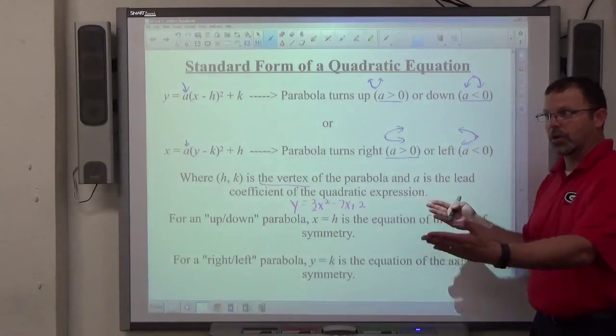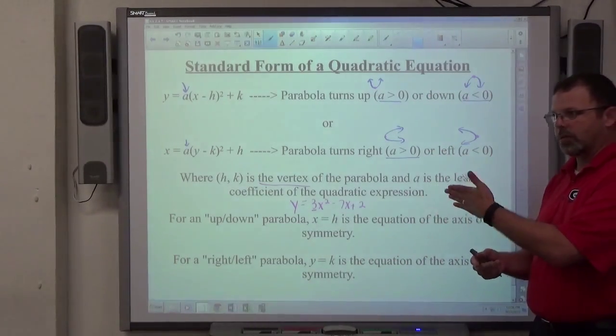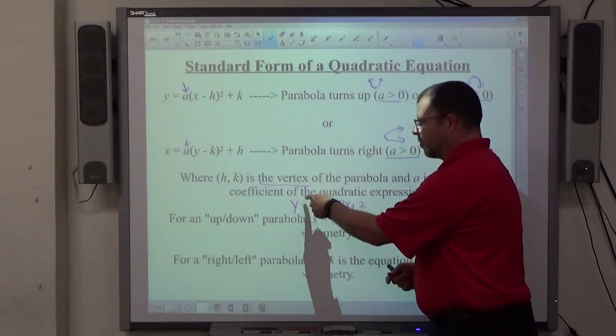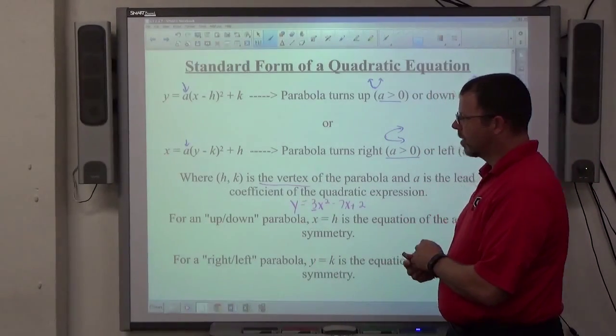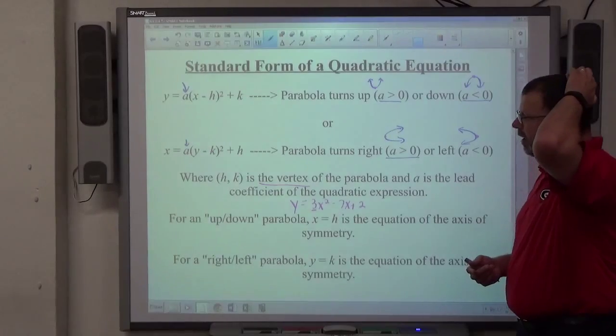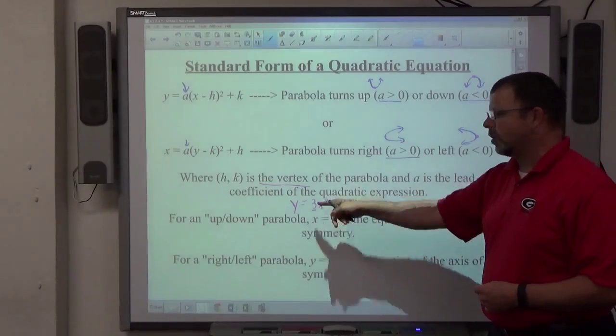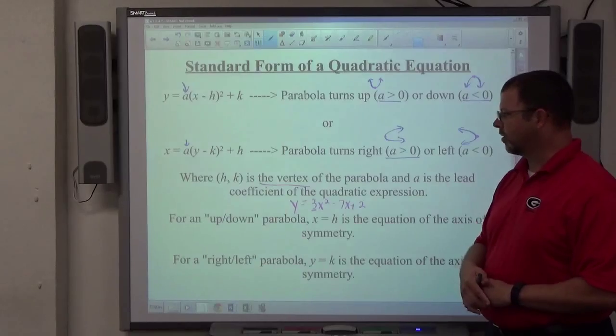So when it's in general form, y equals everything else, the number in front of x squared is what a is. So if we can determine the vertex and we can also determine the lead coefficient, we can get the standard form pretty easily here.